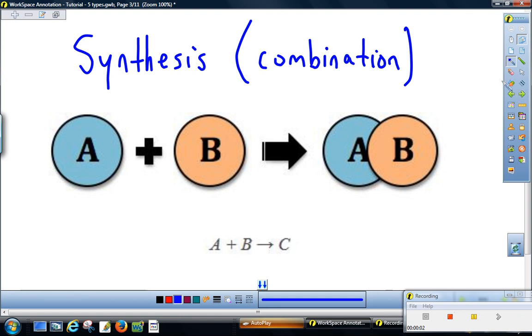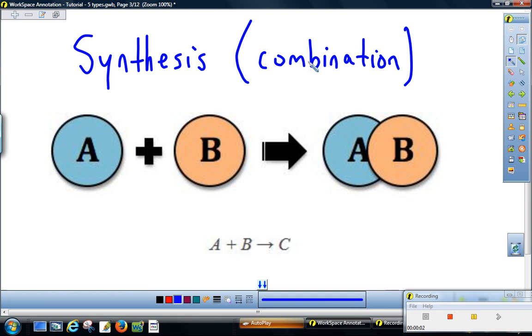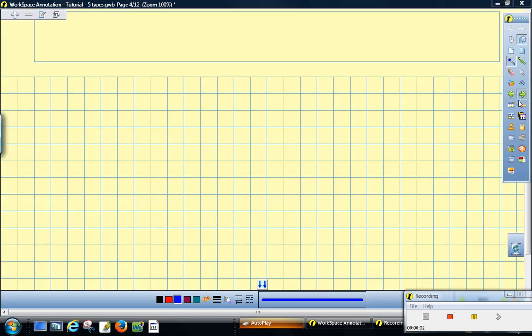Synthesis reaction, also called a combination reaction, because two things that were separate are going to come together and combine chemically. A plus B makes AB, or A plus B makes C. We're going to make a compound that we didn't have before.